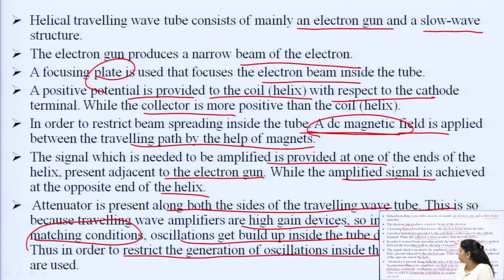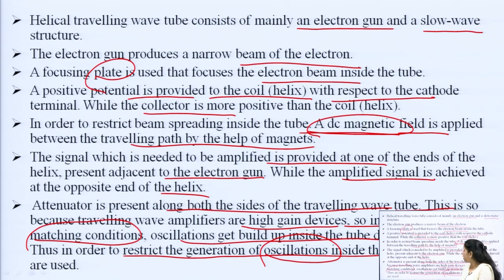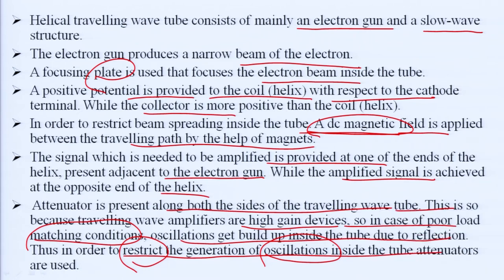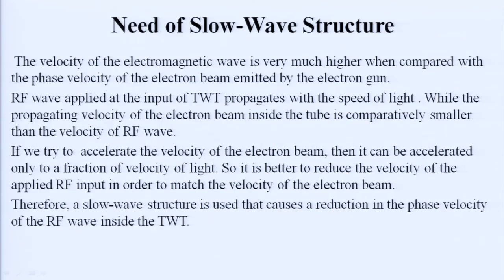Whenever reflections occur, oscillations take place. Backward reflection is necessary for oscillation to occur. We have to avoid oscillations and restrict their generation because TWT is an amplifying device, not an oscillating device. The magnetron and reflex klystron which we studied in the last lectures are oscillators, but TWT is an amplifying device and we have to avoid oscillations by avoiding backward reflections.